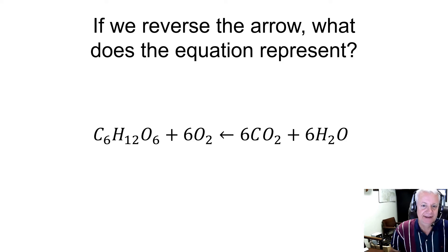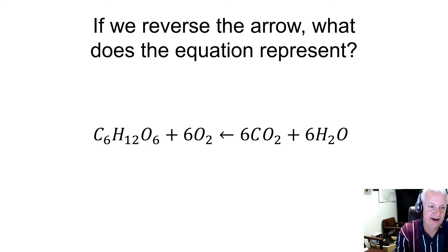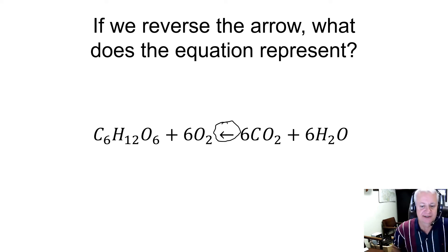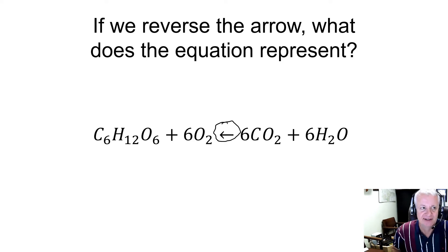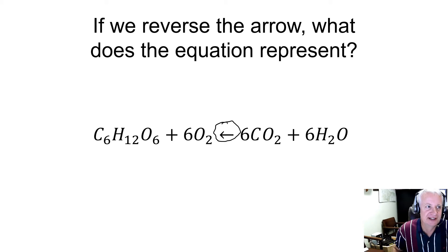Thinking about that reaction — what happens if we turn the arrow around and face it the other direction? That's photosynthesis, right? CO2 and water yields glucose and oxygen. So you can almost think about respiration as the process that reverses the process of photosynthesis.